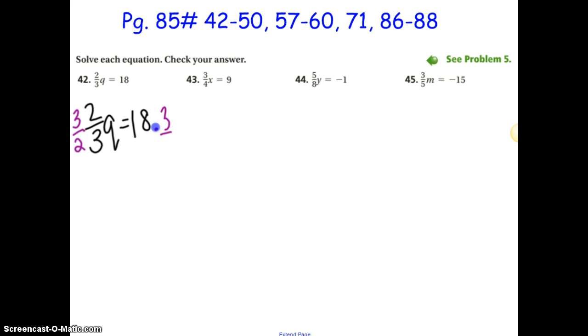So then times three halves, but I don't have anything under the 18. Oh, put a one there. Good, here's my line. Look at, this simplifies out to one Q. So there's my one Q over here. 18 times three, and then one times two. But watch this. 18 over two can simplify to nine over one. So nine times three, Q equals 27.